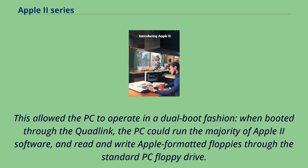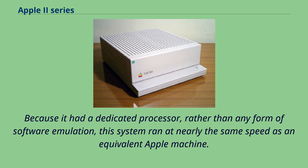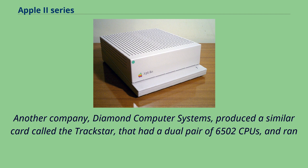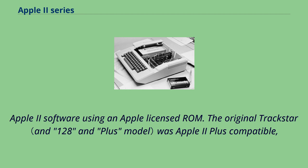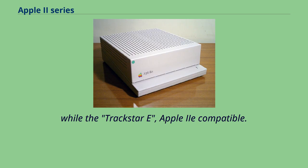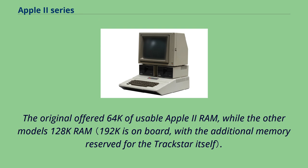Because it had a dedicated processor rather than software emulation, the QuadLink ran at nearly the same speed as an equivalent Apple machine. Diamond Computer Systems produced a similar card called the TrackStar, which had a dual pair of 6502 CPUs and ran Apple II software using an Apple-licensed ROM. The original TrackStar was Apple II Plus compatible, while the TrackStar E was Apple IIe compatible. The original TrackStar also contained a Z80 CPU, allowing it to run both Apple DOS and Apple CP/M software, though newer TrackStar models dropped CP/M compatibility.